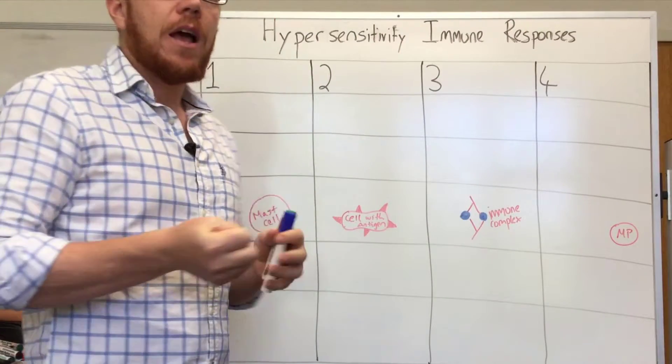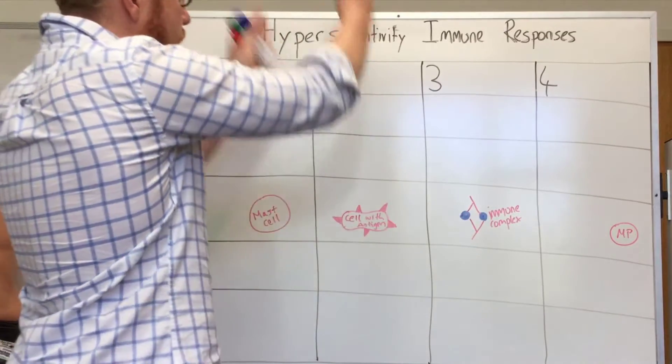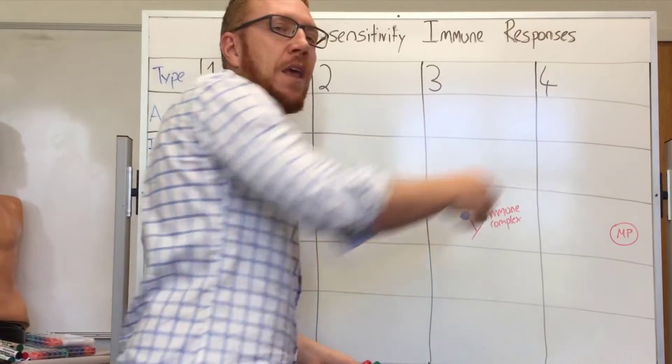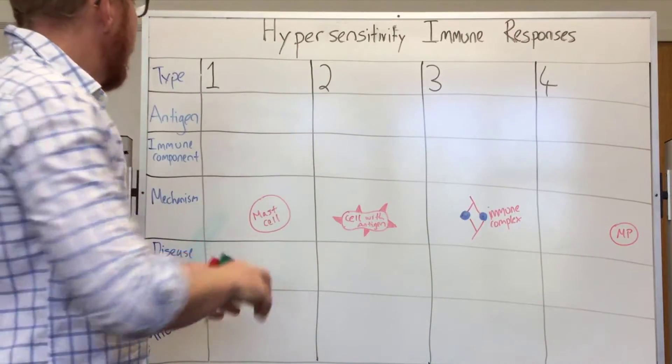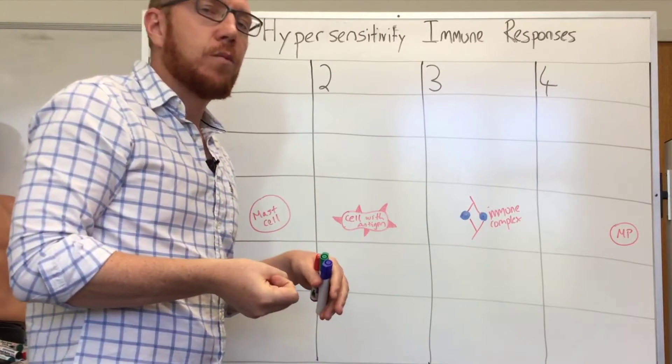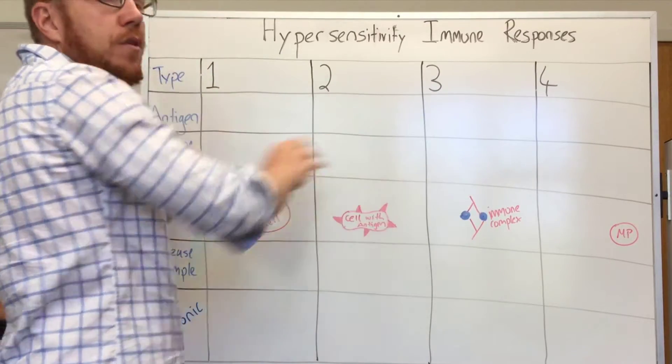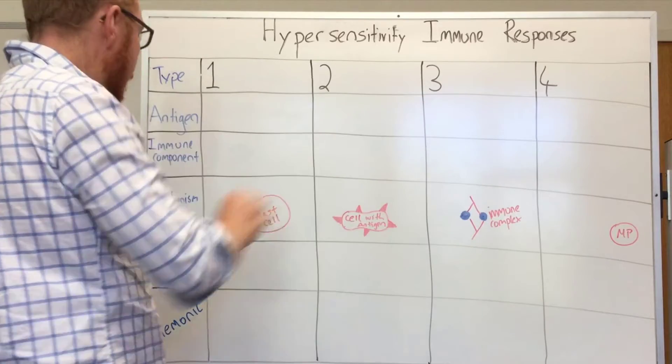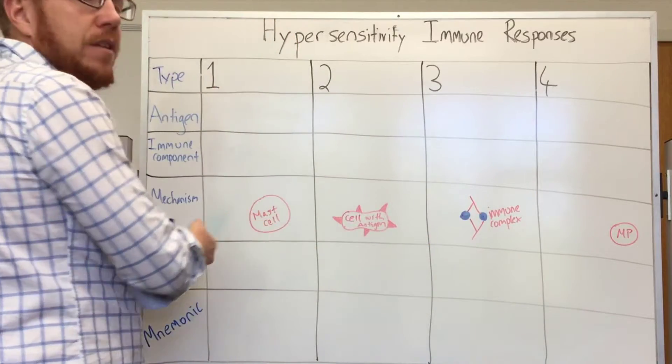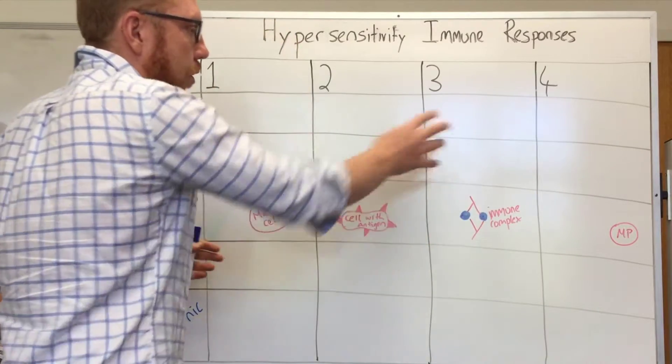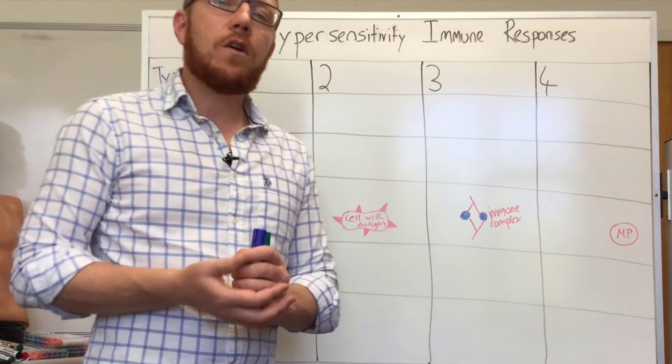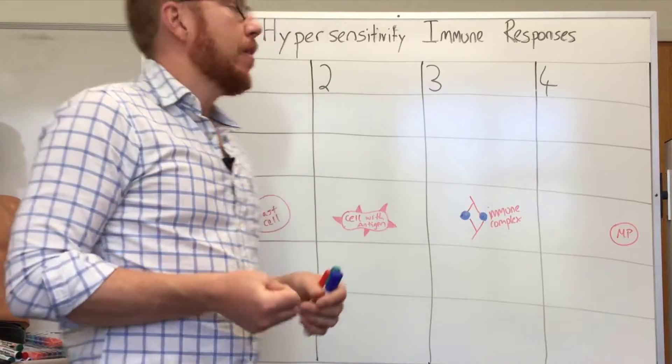Now the types of hypersensitive disorders are broken into four types: one, two, three, four. What we'll go through today is firstly the antigen, the stimulating factor that causes the response. We look at what part of your immune system is the main player, we look at a basic mechanism for each type, give a couple of disease examples, and then finally we have a really good mnemonic to help you remember these particular types.